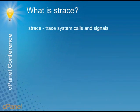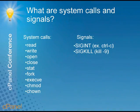What is strace? strace traces system calls and signals — that's from the man page. It does beg the question: what are system calls and signals? System calls include things like read, write, open, close, stat, fork, execute, change mode, change ownership — all the things you're used to doing at the command line.